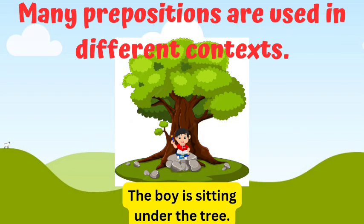Many prepositions are used in different contexts. For example, the boy is sitting under the tree. In this sentence, boy and tree are nouns, whereas under is a preposition.